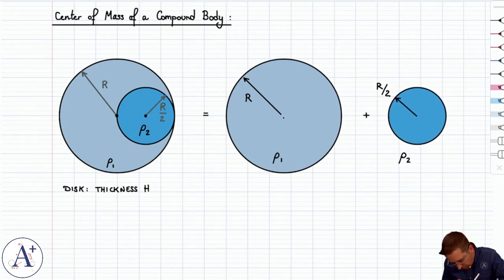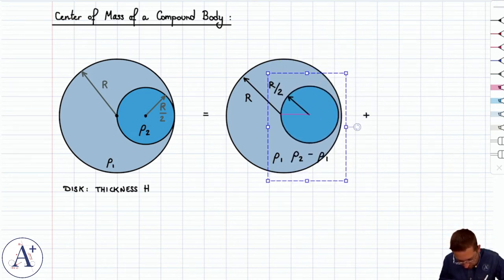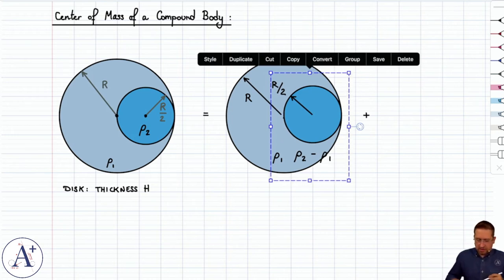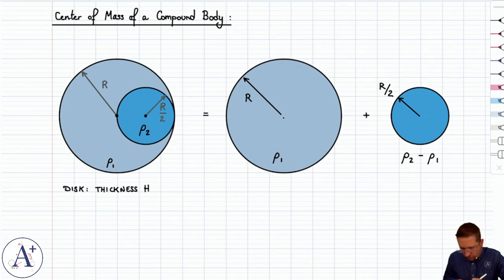So instead we're going to do this, we're going to assign a mass density rho two minus rho one to this disc. And the logic here, again, is that if you superpose the two now, you can say that rho two minus rho one plus rho one from the larger disc gives you in the overlap region a mass density rho two, and that matches what we had originally.